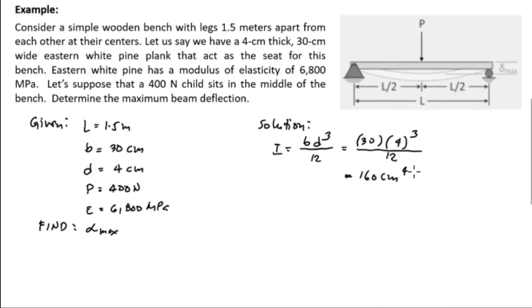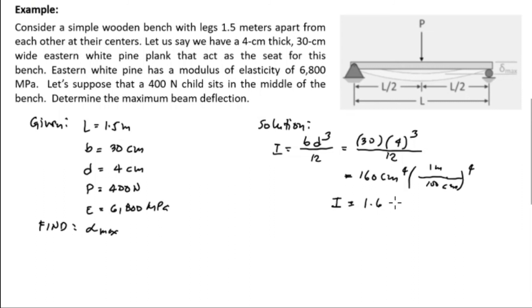Converting to meters: 1 meter = 100 cm, so 1 cm⁴ = 10⁻⁸ m⁴. The value for I in m⁴ is 1.6 × 10⁻⁶ m⁴.